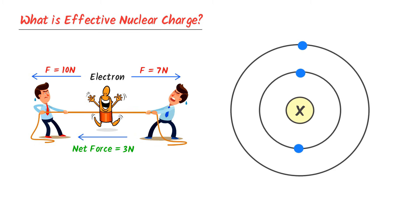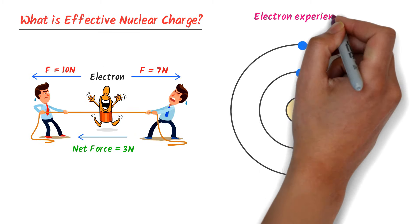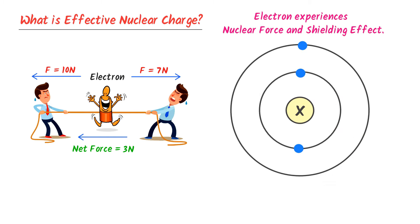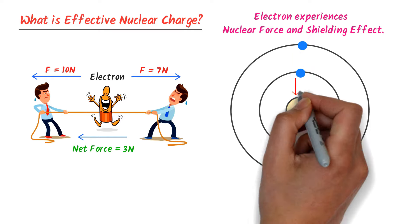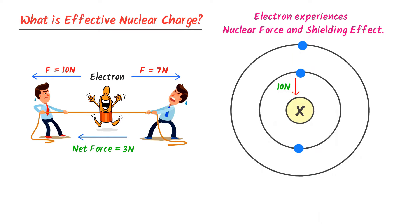Now consider this atom. Inside the atom, this electron experiences two forces: nuclear force and shielding effect. The shielding effect is the inner repulsion between these two electrons — they have the same negative charges so they repel each other. This electron experiences 10N force of the nucleus in this direction, which is also known as nuclear force. On the other hand, this electron experiences a repulsive force of 7N in this direction,